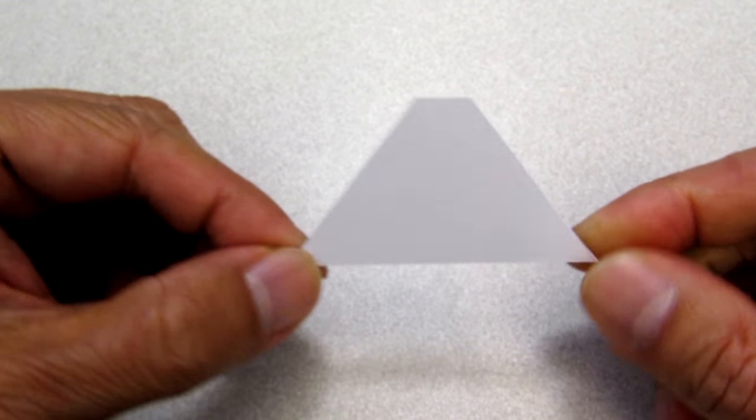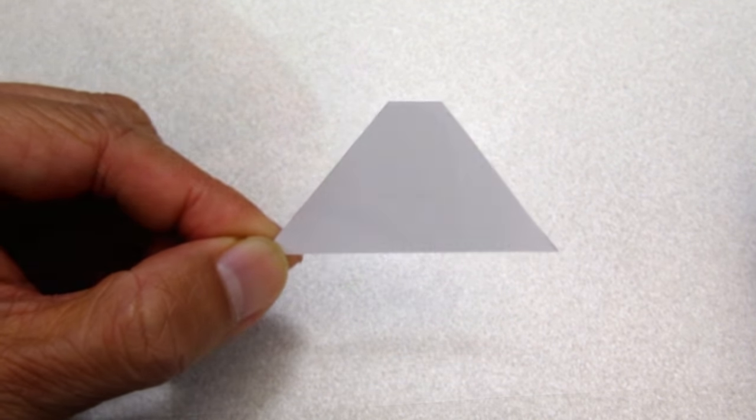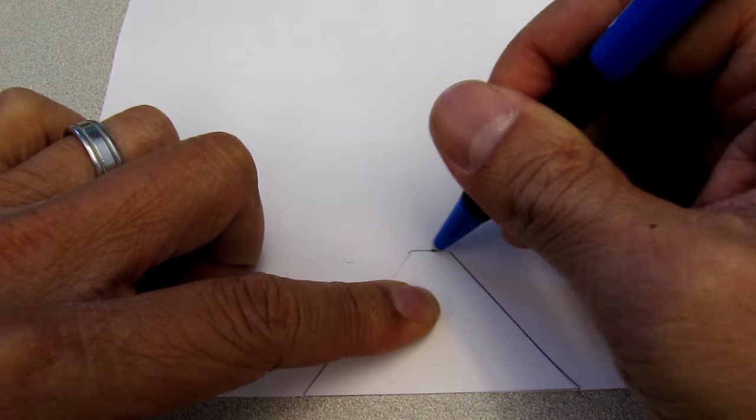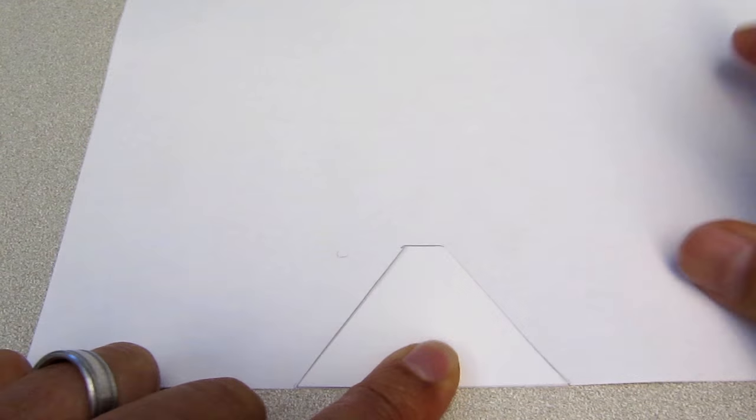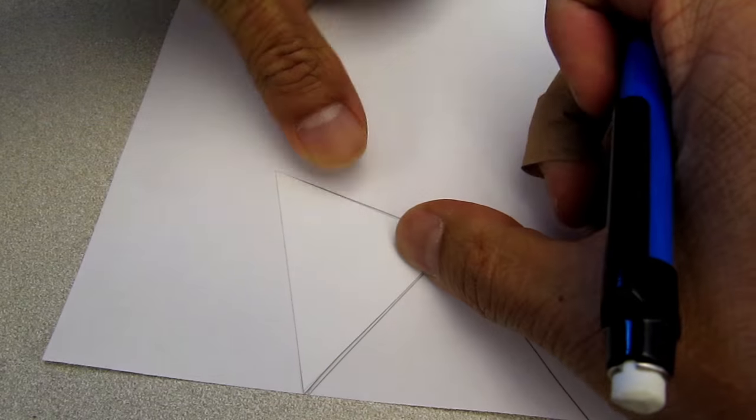This is now the template I'll use to draw a bigger template on the typing paper. Start on one edge of the paper and trace the template. We'll do this 4 more times.